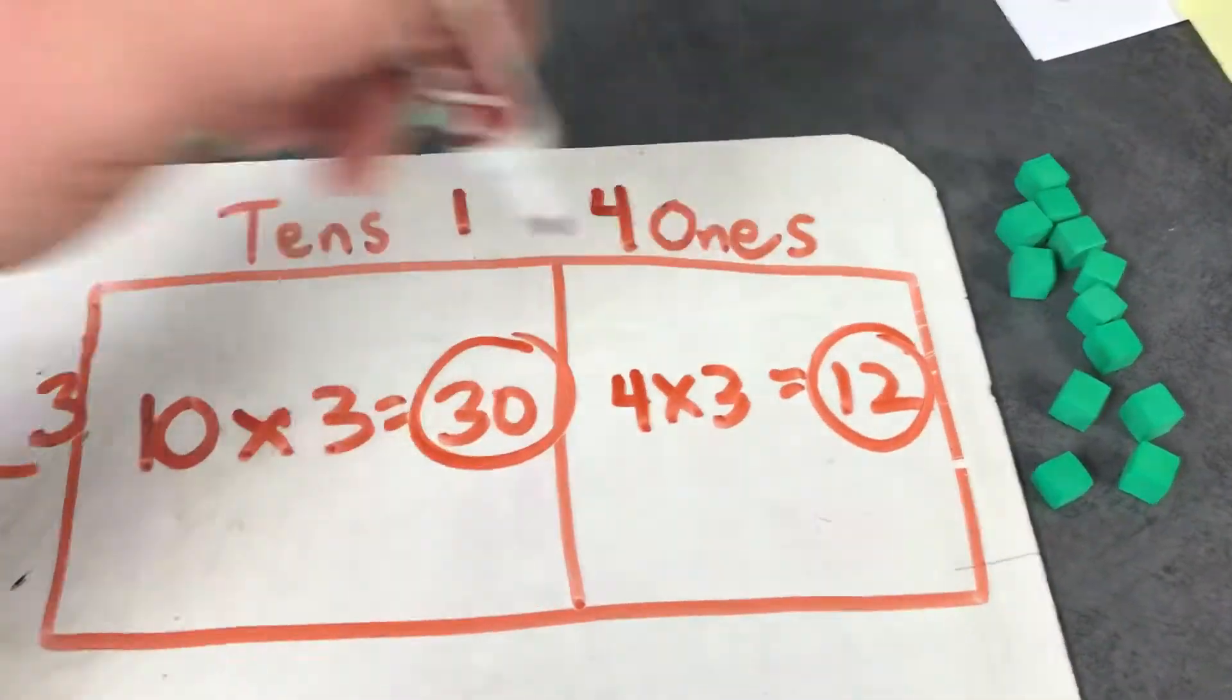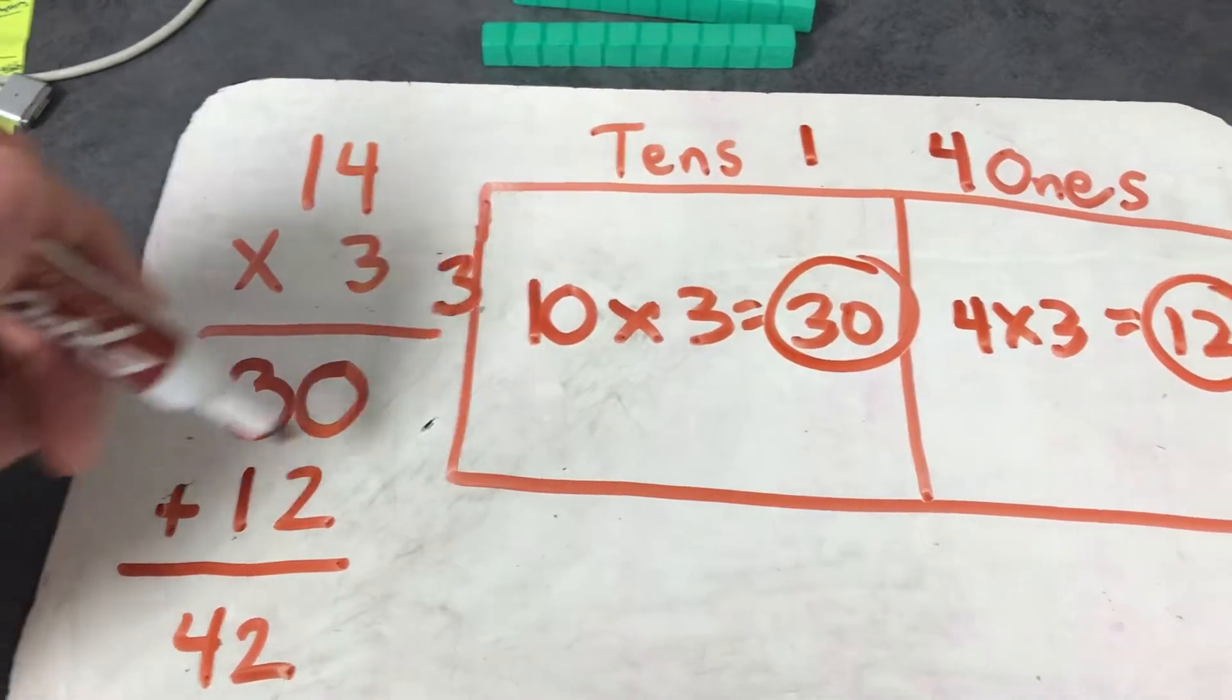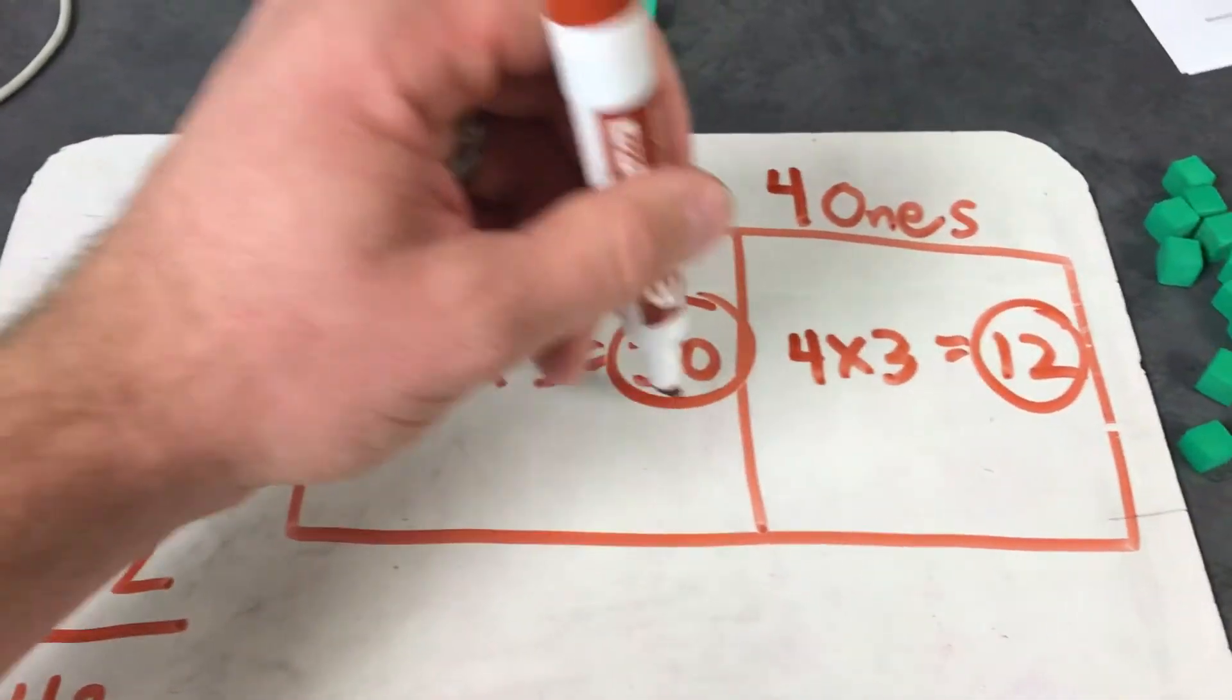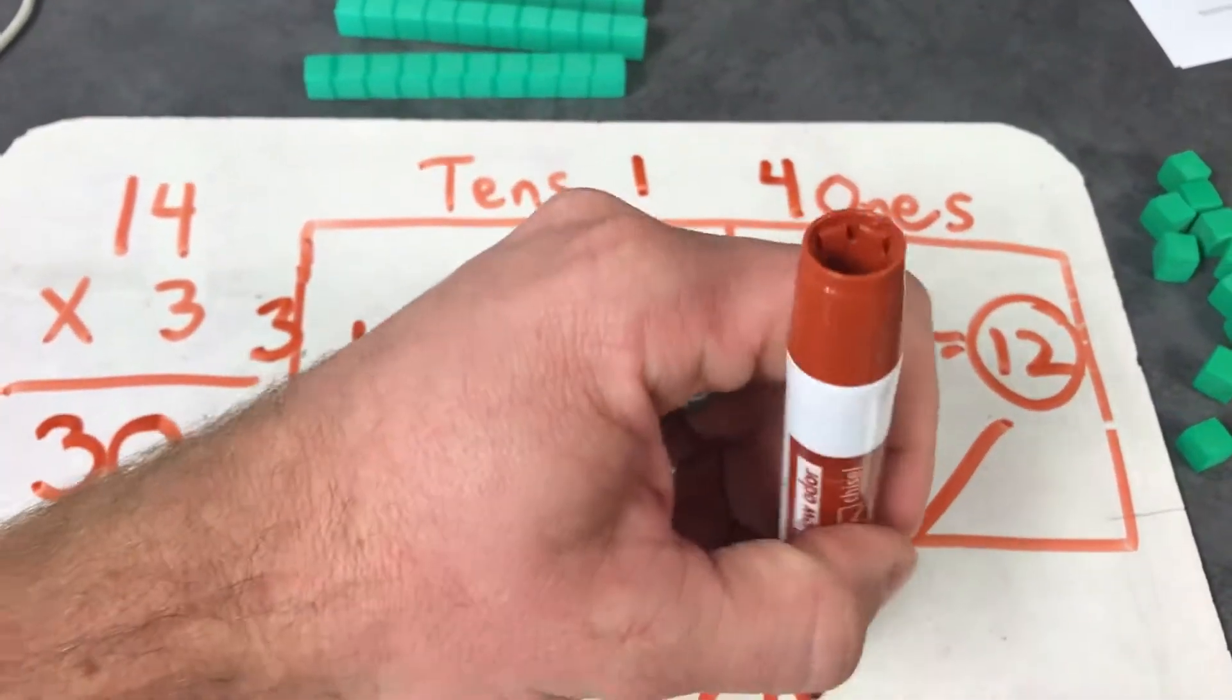Here you'll see our thirty and our twelve, our thirty and our twelve. We broke them apart. Now we simply put them together and we get forty-two.